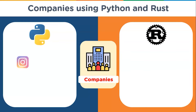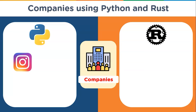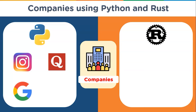Now let's see some popular companies using these languages. Starting with Python: Instagram is mainly a visual social media platform that uses Python in its business logic — the exchange of data between the database and user interface. Quora is a question-and-answer social media platform that has used Python to develop its application. Google uses Python as an official server-side language along with C++, Java, and Go.